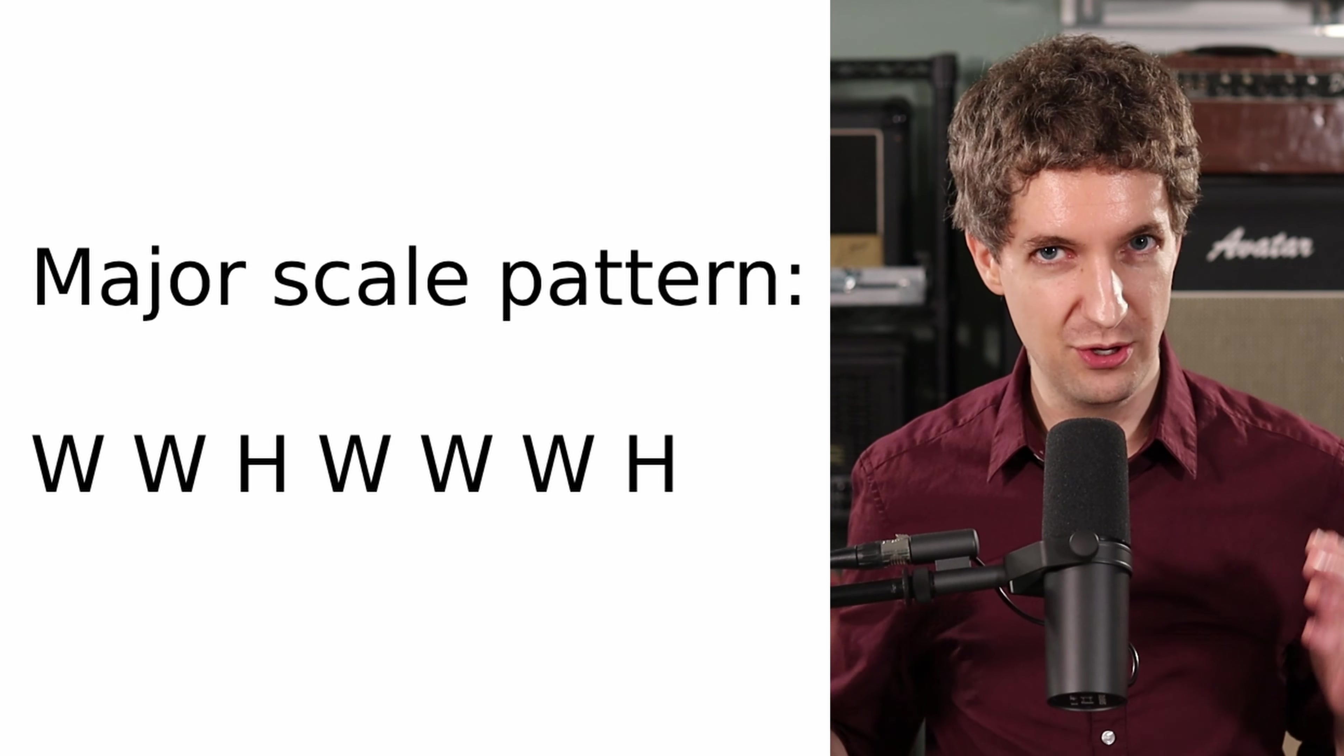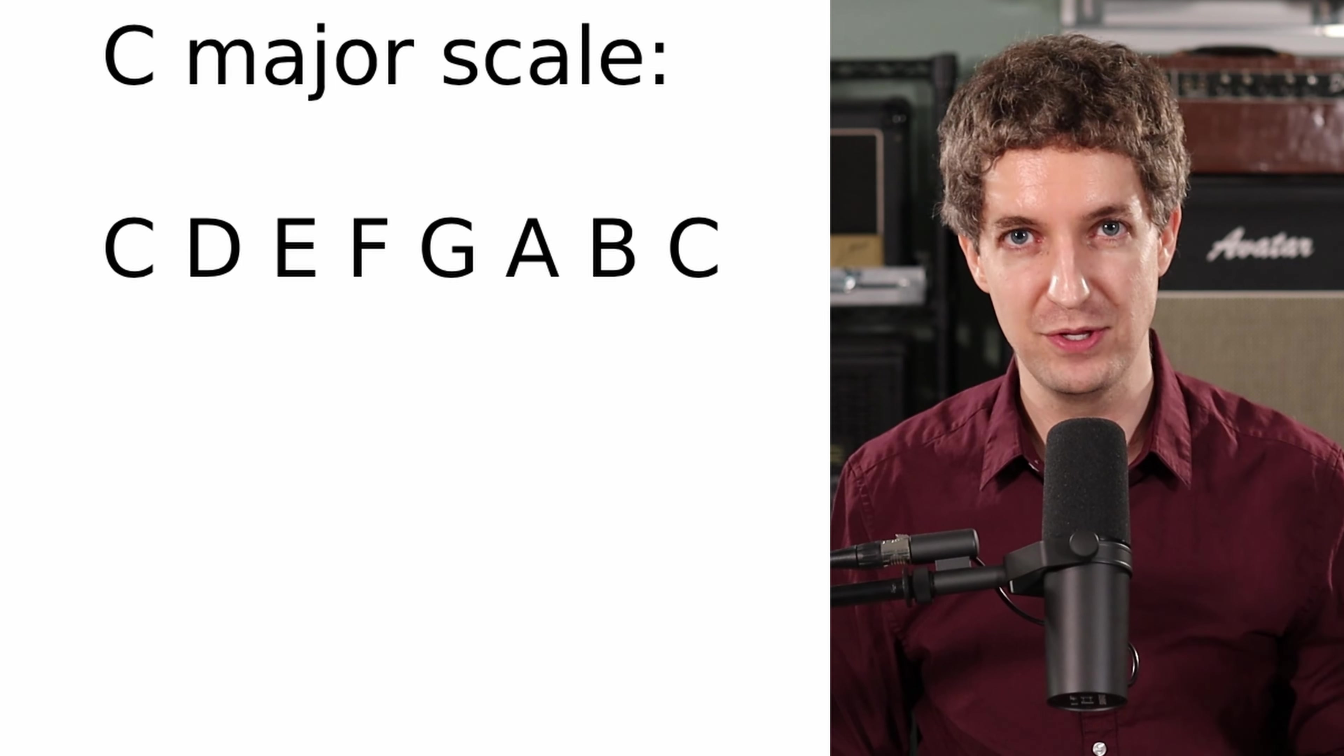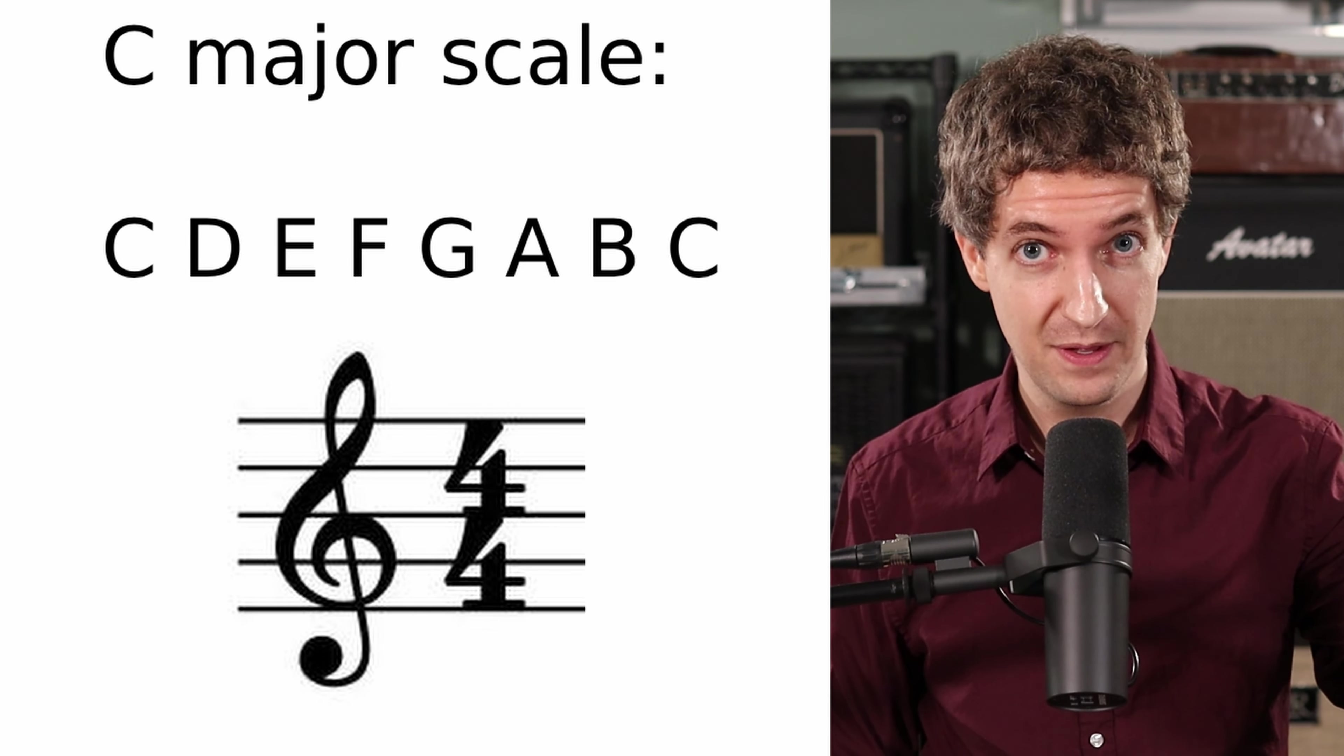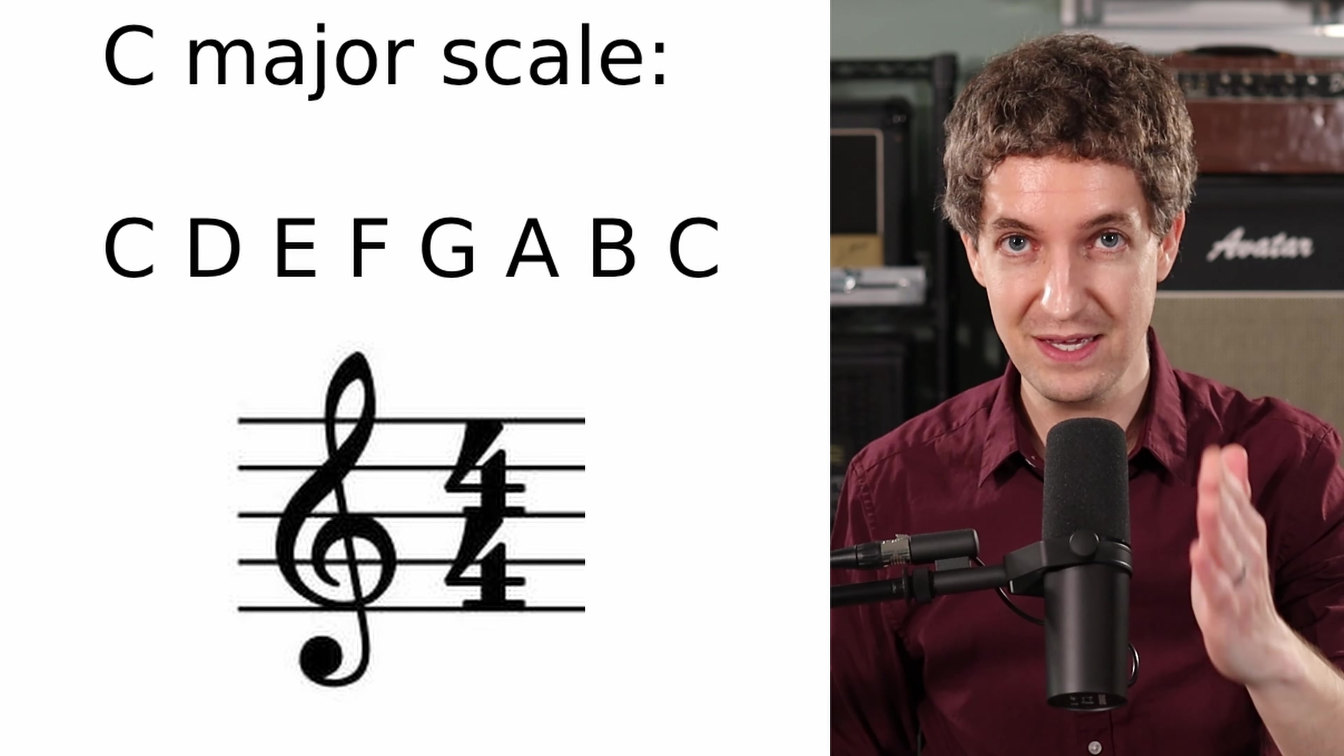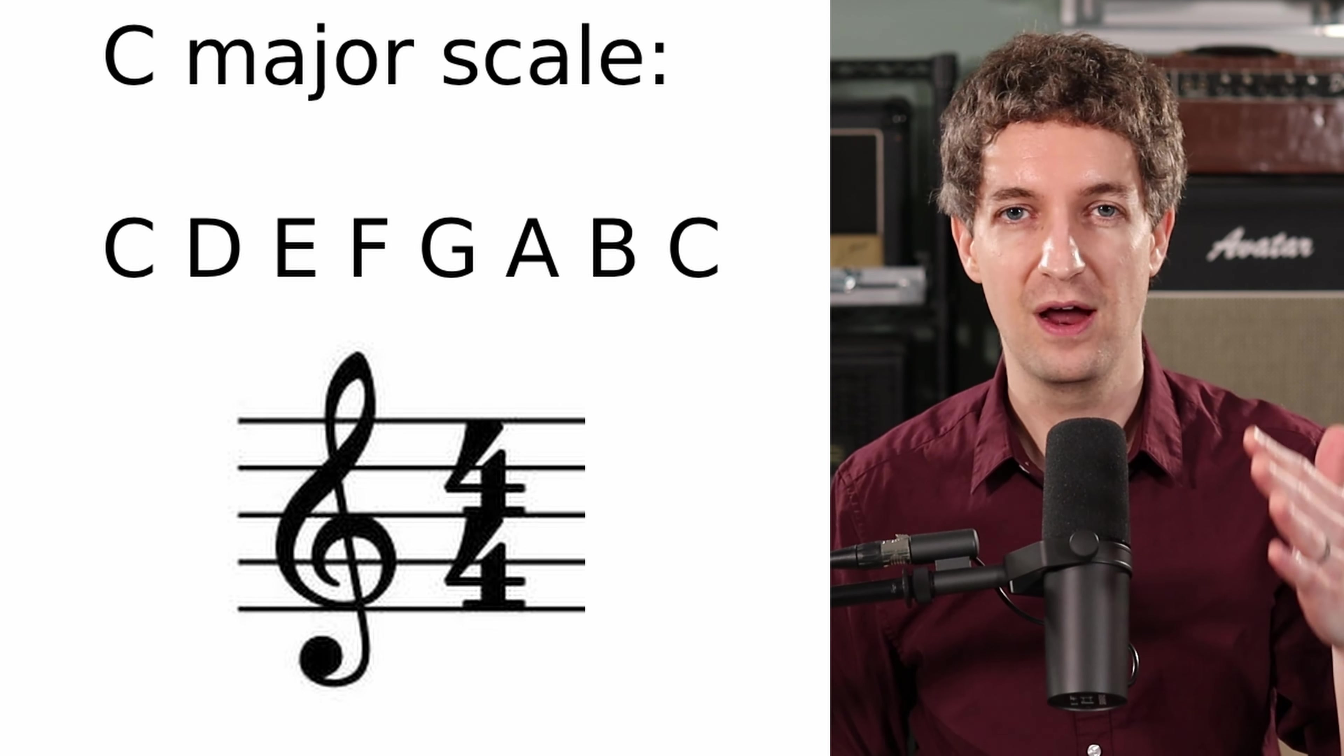If I start on the note C and I play to the next C and I play all white keys, that is a C major scale with no sharps, no flats, no black keys, just all white keys. It just so happens to create the whole, whole, half, whole, whole, whole, half pattern. So if you're in the key of C, at the beginning of your piece you're going to see your clef, then you're going to see nothing, and then you're going to see your time signature. There'll just be a blank key signature there, no sharps, no flats. But C is unique in that way. C is the only major key that has no sharps, no flats. All the other keys are going to have something there.